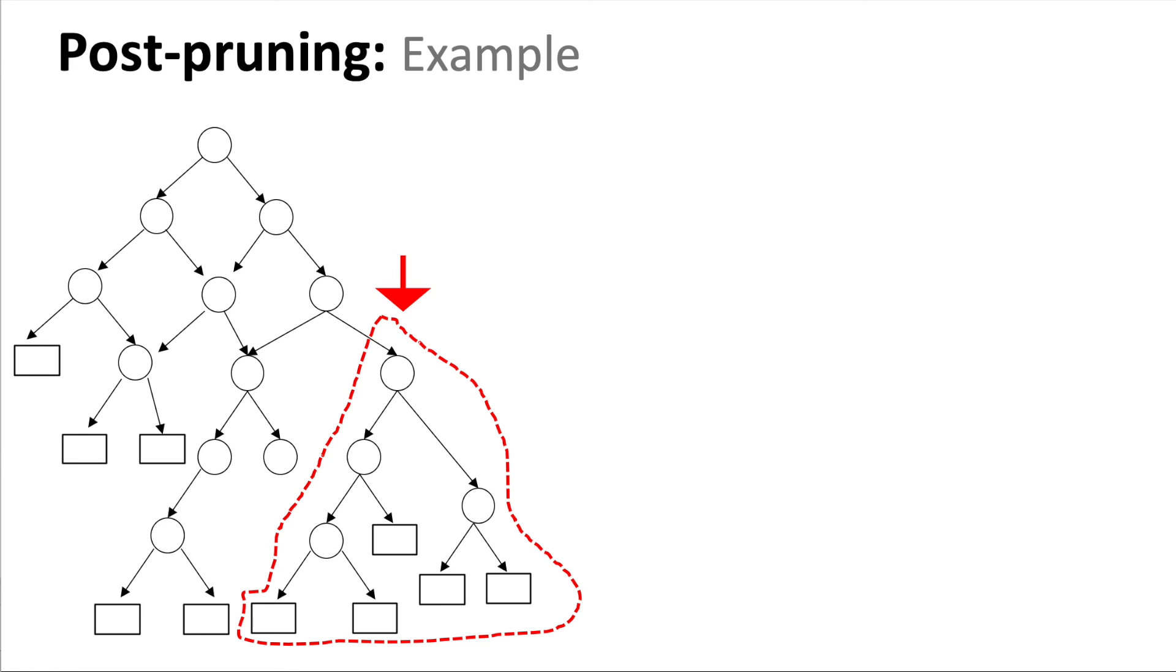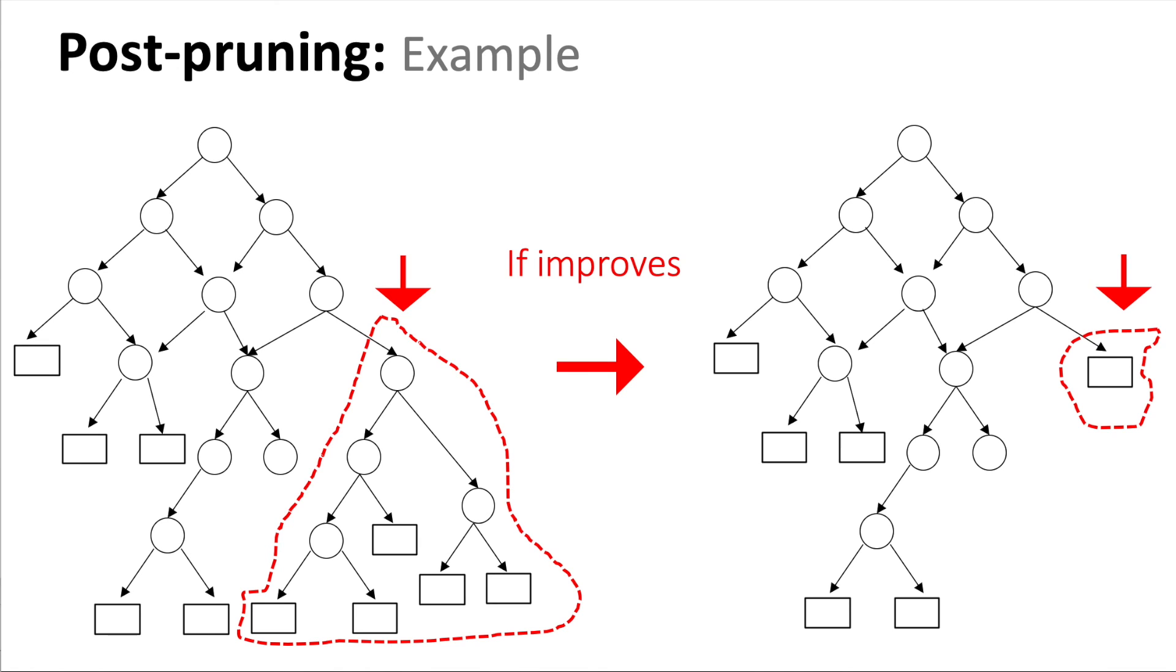with just one leaf node with the most frequent class at that point. And we compare both trees. So if the right tree has a better performance, then we stick to that model because it's simpler.